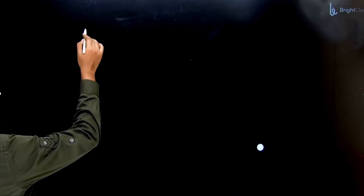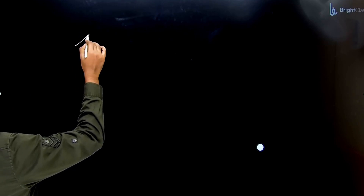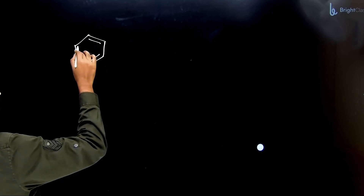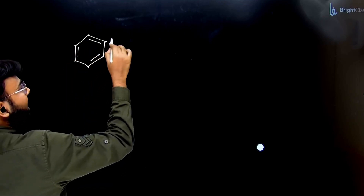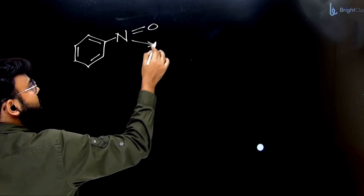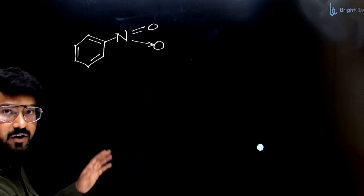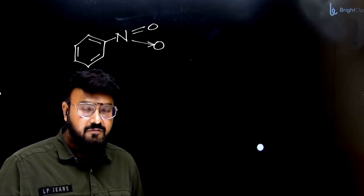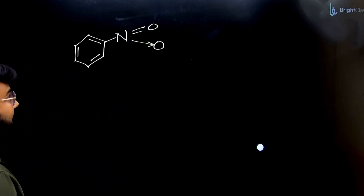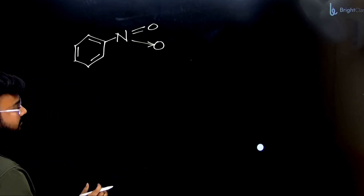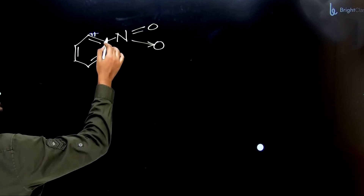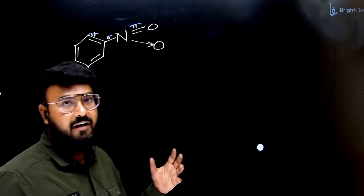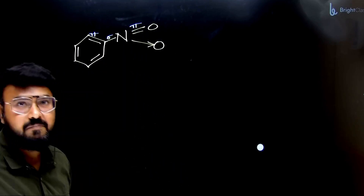Now let's take some examples. First, we will try doing the resonance in nitrobenzene. We will draw a benzene structure and add a NO₂ group. Now let's see whether we have a conjugation pattern. We can see there is a pi, then a single bond sigma, and then a pi — so yes, we have found the conjugation pattern pi-sigma-pi.